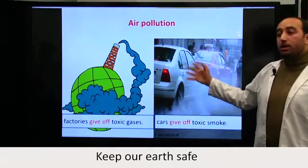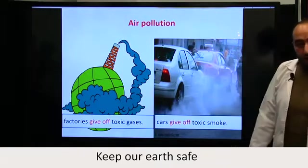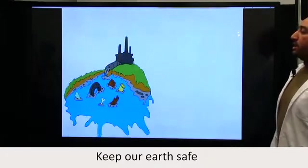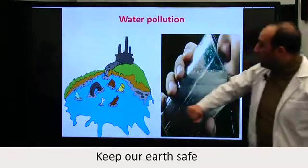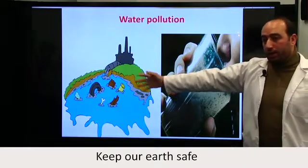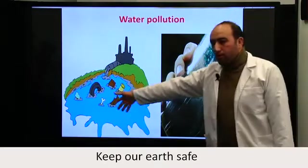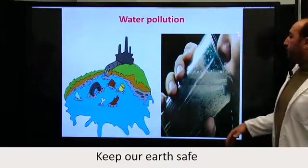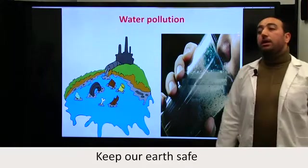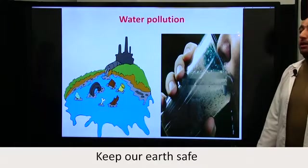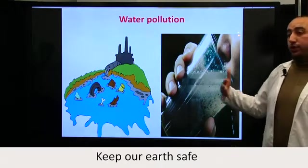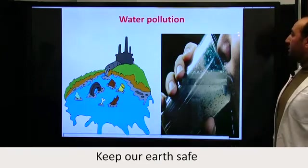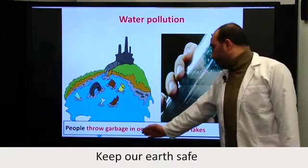The second type is water pollution. Here you have a factory putting its chemicals into a river, ocean, or lake. And here you can see a man drinking water that is not drinkable — it's full of bad substances. People throw garbage in oceans, rivers, and lakes.